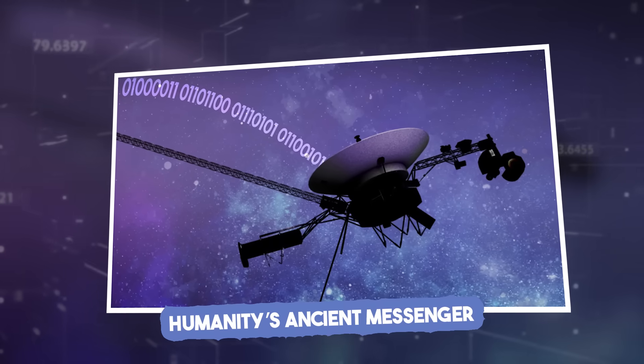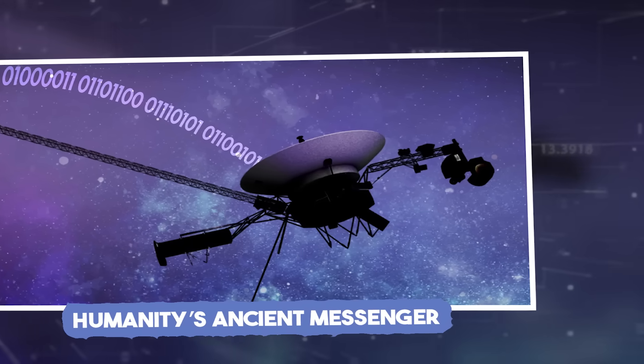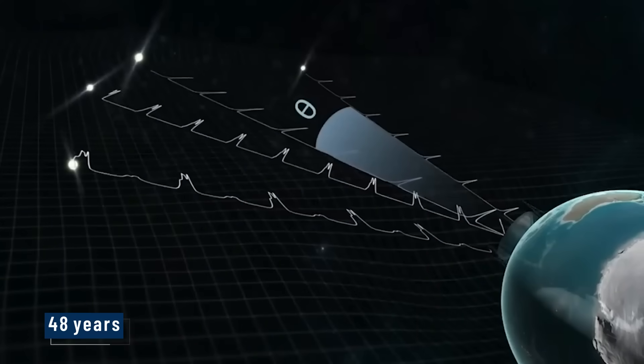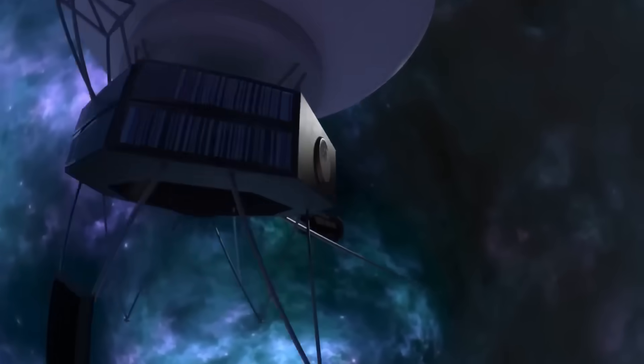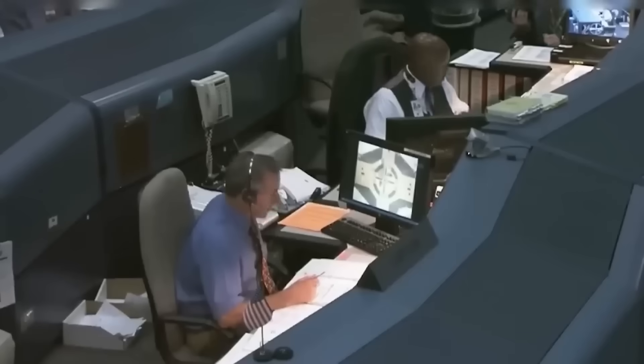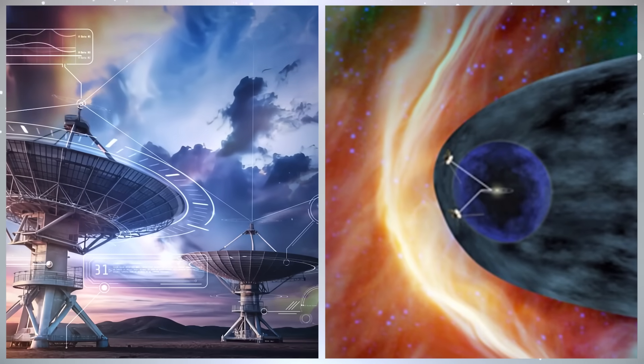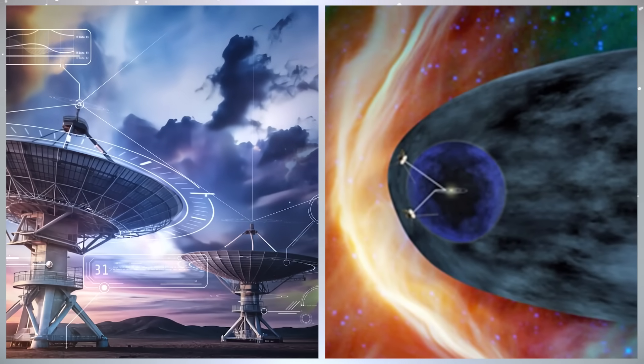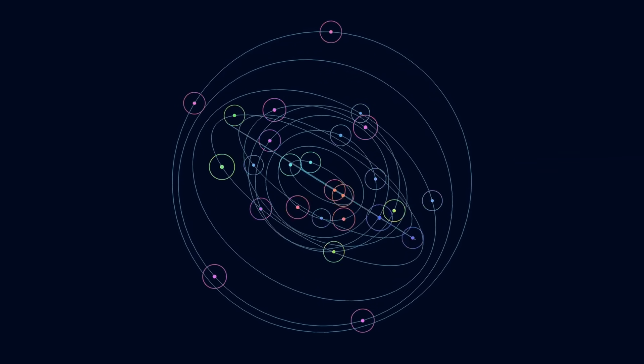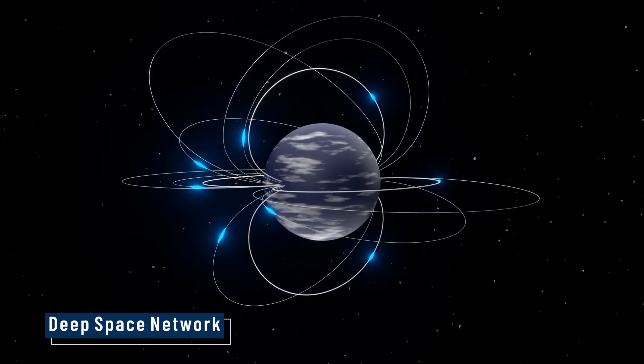When Voyager 2 launched on August 20th, 1977, it carried more than instruments. It carried human curiosity beyond the planets. For nearly 48 years, the spacecraft has drifted through the cold silence of interstellar space, now over 12 billion miles from Earth. It's powered by a fading plutonium RTG, its sensors weakened by time, yet still whispering faint radio signals to the deep space network.